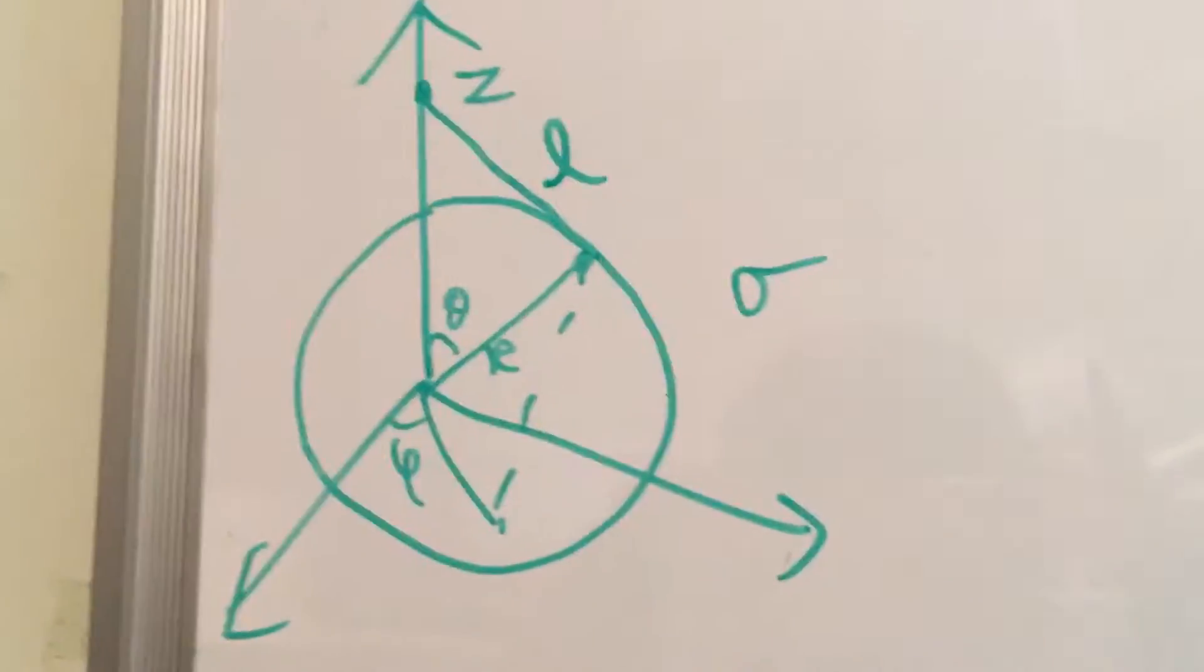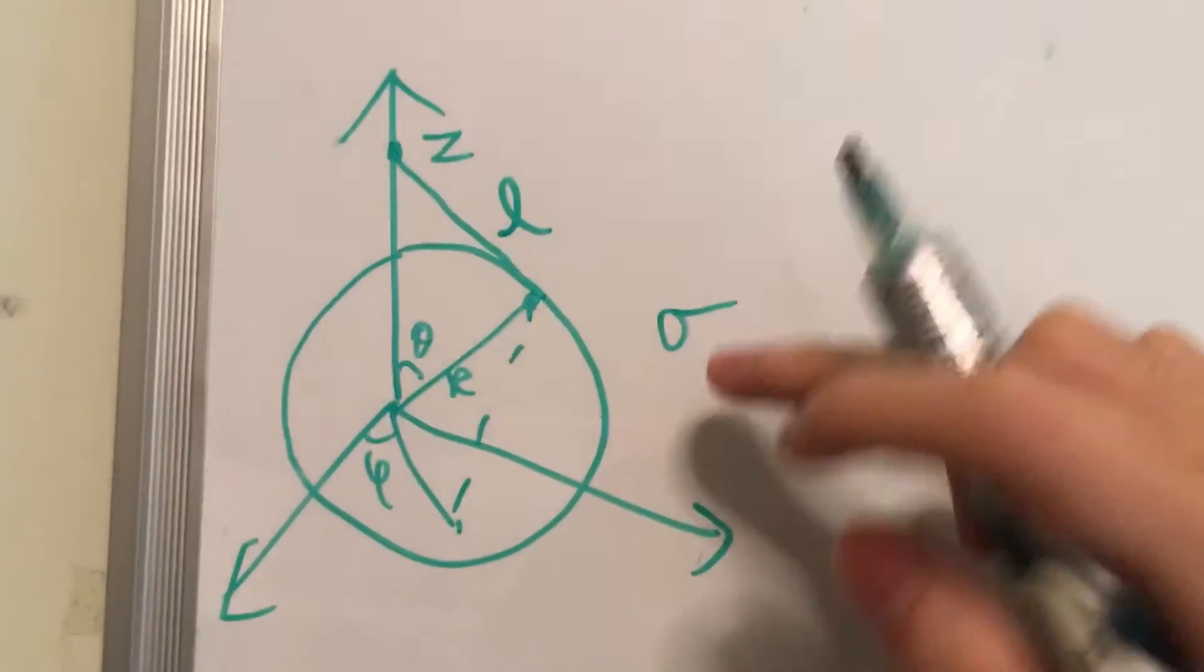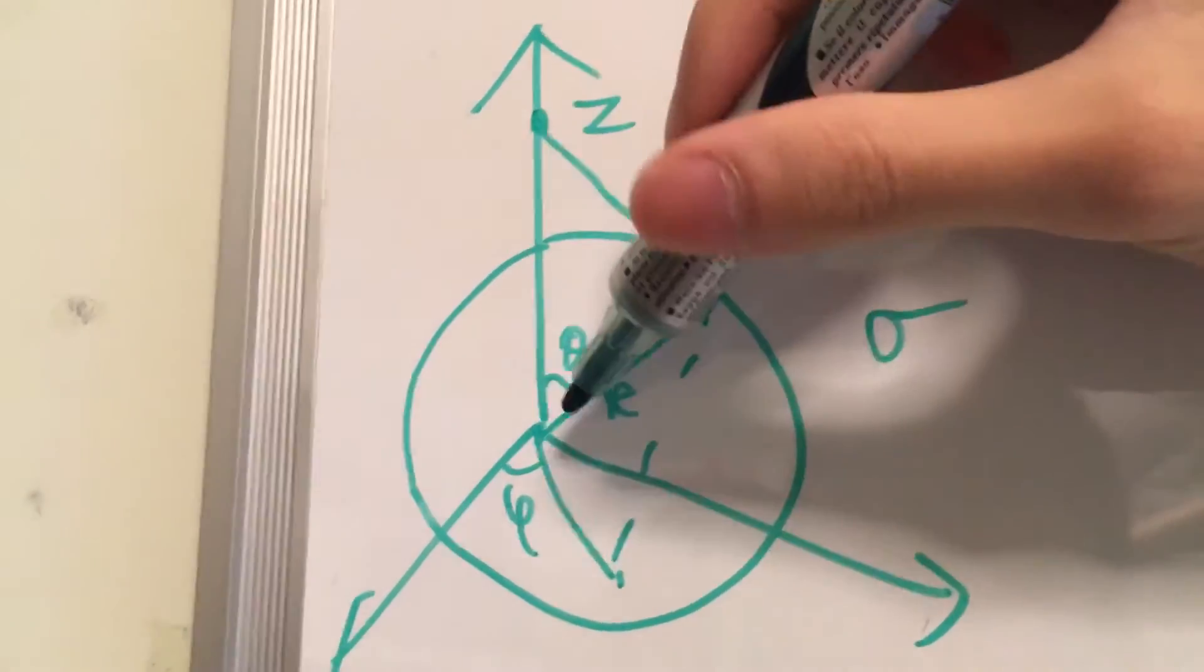What we have here is a sphere with a charge density of sigma, and what we would like to find is the electric field at this point, at a distance of z from the centre of the sphere.